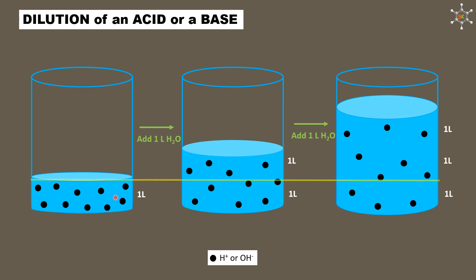Now, if we consider 1 liter solution from beaker 1, 1 liter from beaker 2 and 1 liter from beaker 3, we can observe 1 liter of beaker 1 consisting of more number of ions. 1 liter of beaker 2 consists of relatively lesser number of ions and 1 liter of beaker 3 consists of least number of ions. This is called dilution of an acid or a base.